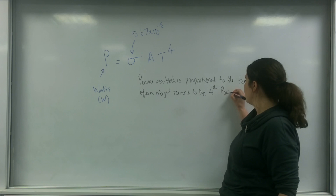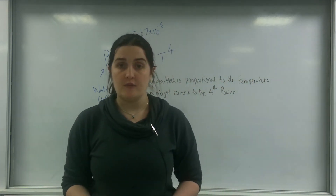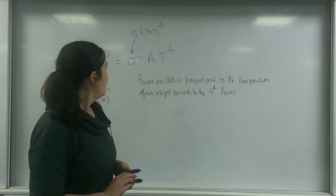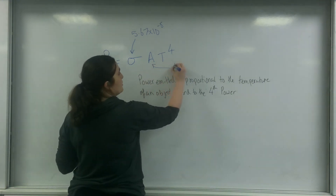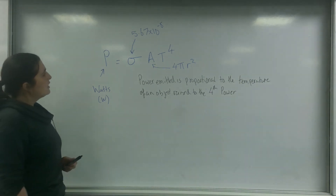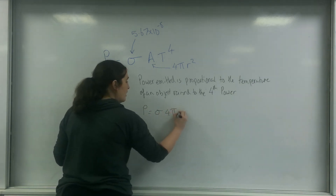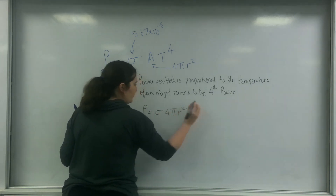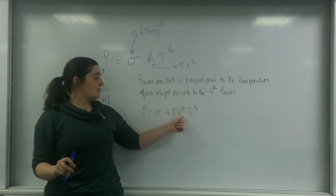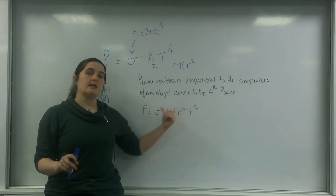The surface area of a star is a sphere, which means the area is 4πr². So I can rewrite the formula as: power equals sigma times 4πr² times T to the 4. A bigger star will give out more power, or a hotter star could give out more power.